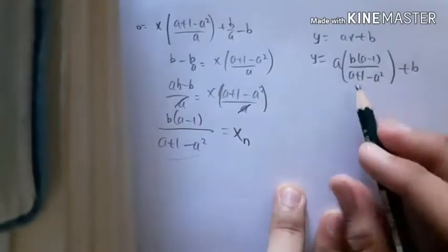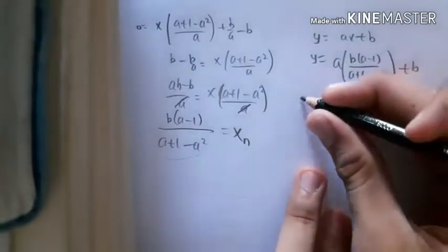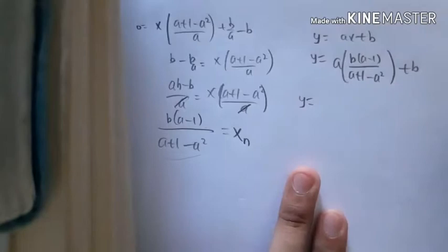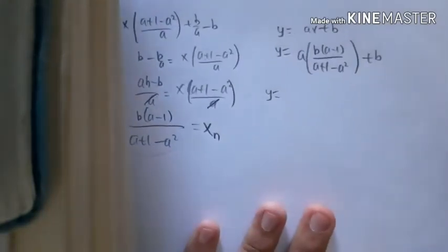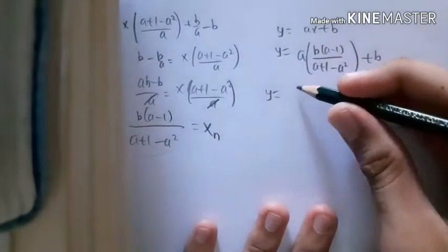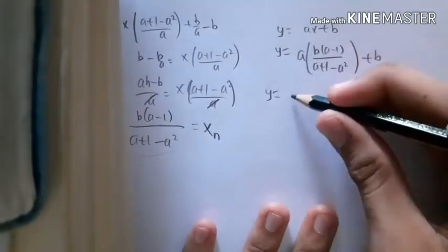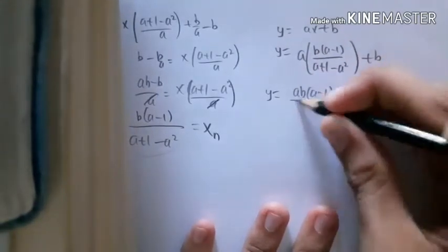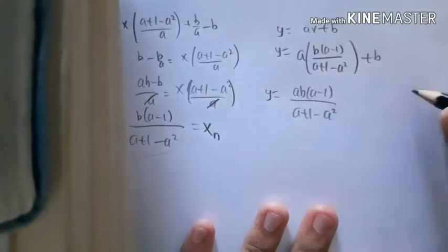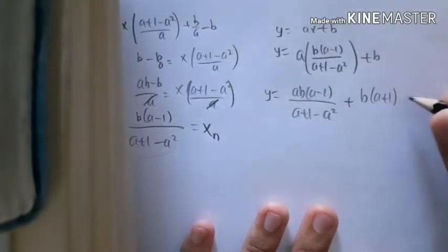Now we just have to make tidy our equation, tidying up our equation so that it will be pretty much comfortable to look. So the way to do it is just multiply that in: ab(a-1)/(a+1-a²) plus b(a+1)/(a+1-a²).